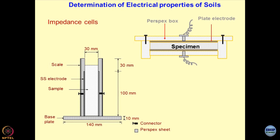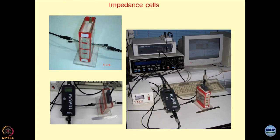The concept of the impedance cell is simple: you take a small rectangular box standing on a base plate with two plate electrodes fitted inside. This box can be used for finding out the impedance of sands. When dealing with liquids, you use a setup where the liquid is contained in the cell with a top cover and two electrodes embedded inside. Both systems can be utilized, and we are measuring the volumetric moisture content of the sample along with its impedance.